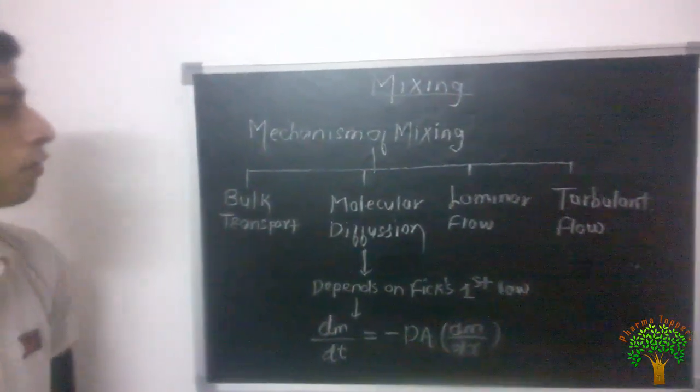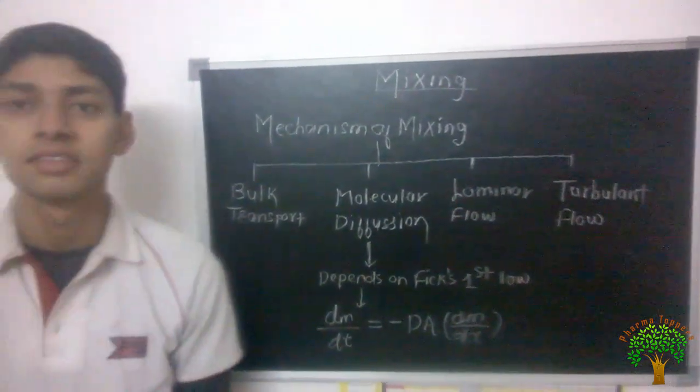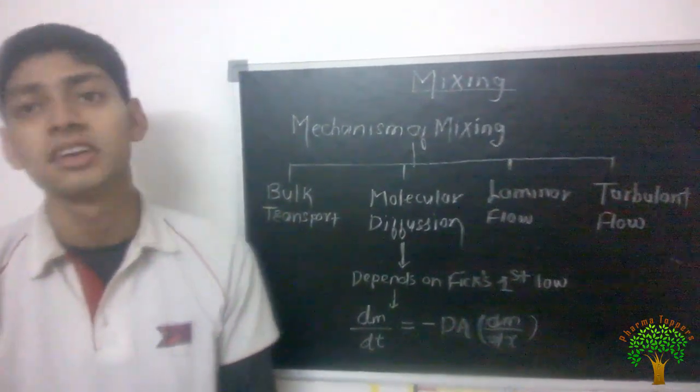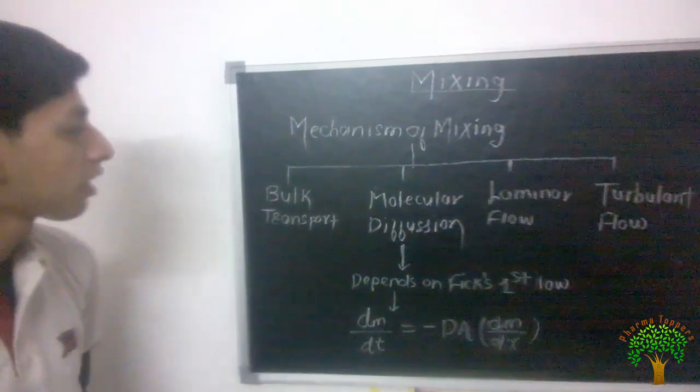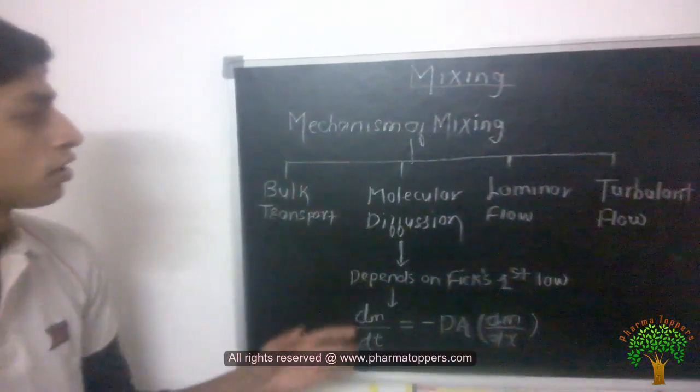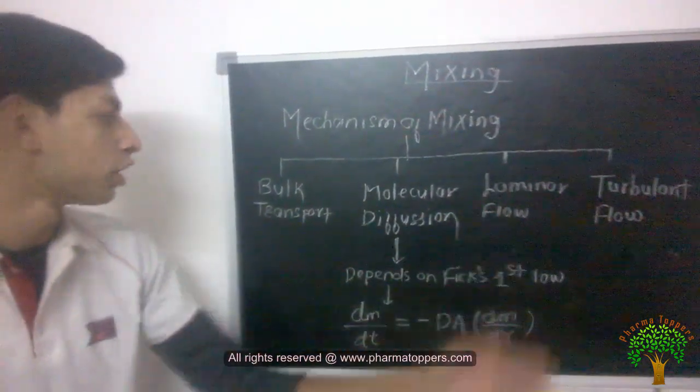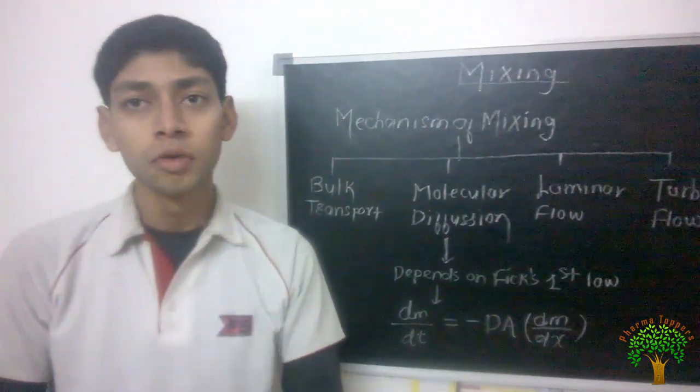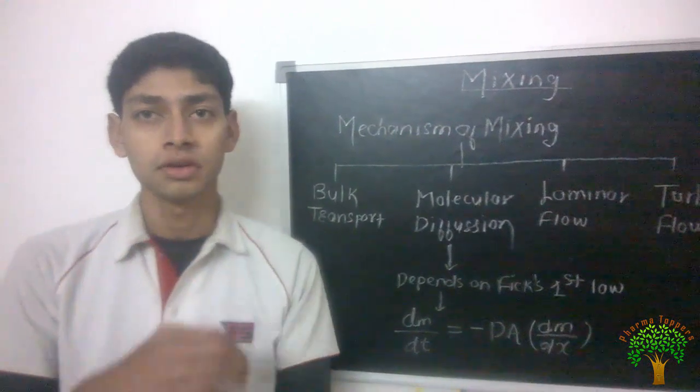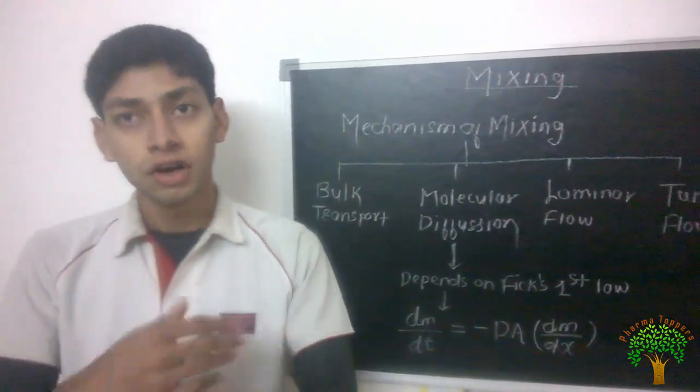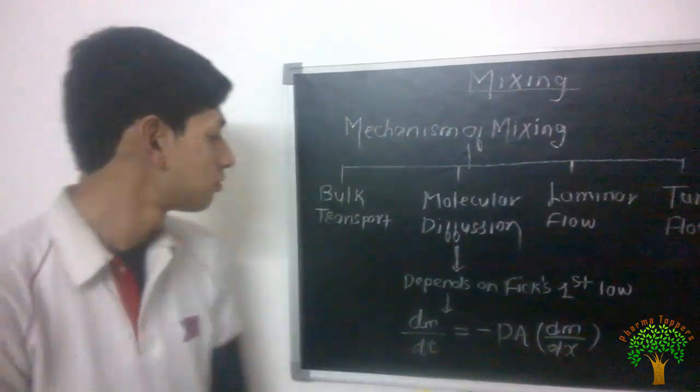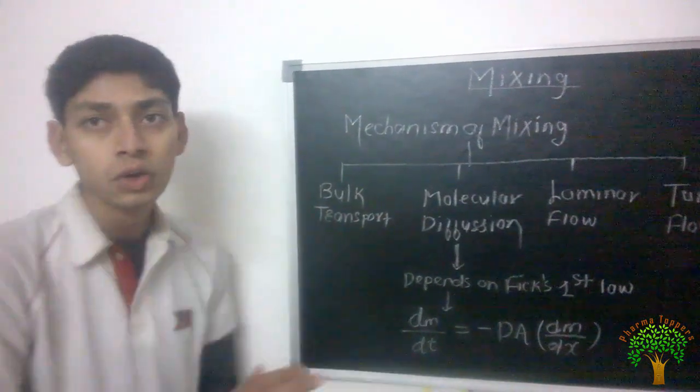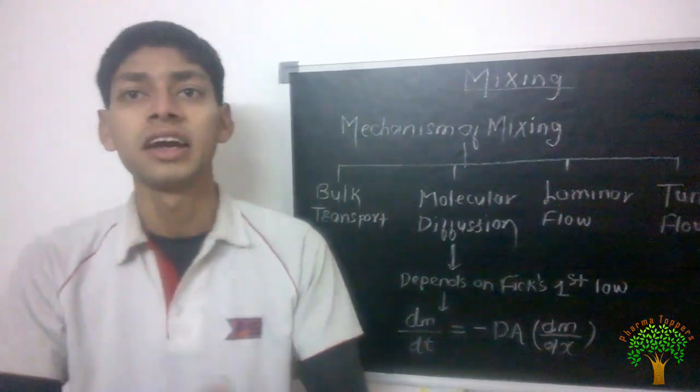Now mechanisms of mixing. How does mixing take place? There are mainly four mechanisms by which mixing takes place: bulk transport, molecular diffusion, laminar flow, and turbulent flow. First one is bulk transport. Movement of particle or movement of solvent from one location to another location is called bulk transport mechanism, and due to that bulk transport mechanism mixing can take place.